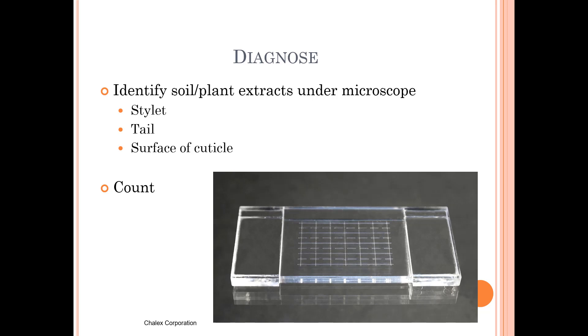You need to send a sample to a lab to have it diagnosed. They can identify the nematode by the type of stylet, the tail, the surface of the cuticle, and then they do a count of how many are present.